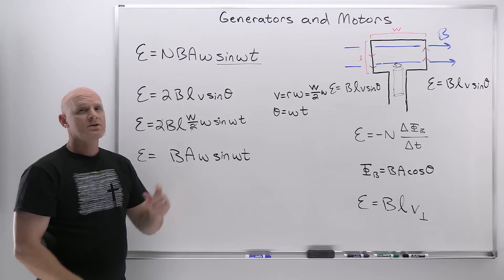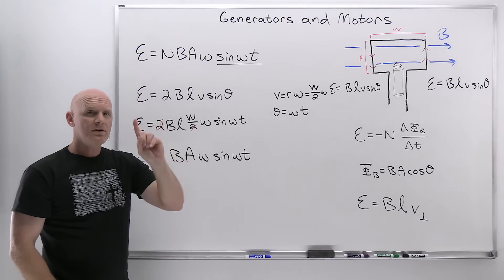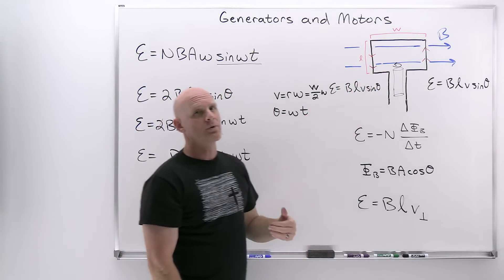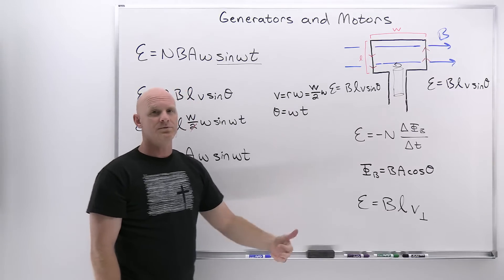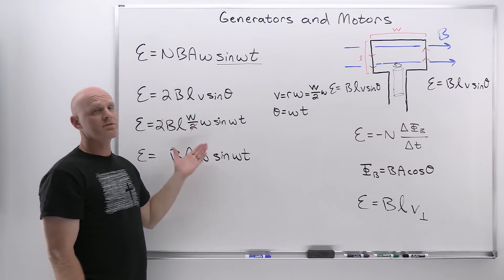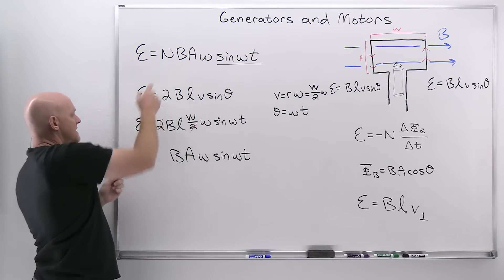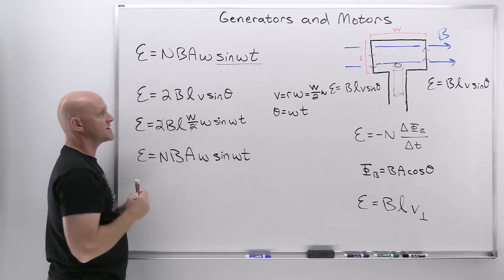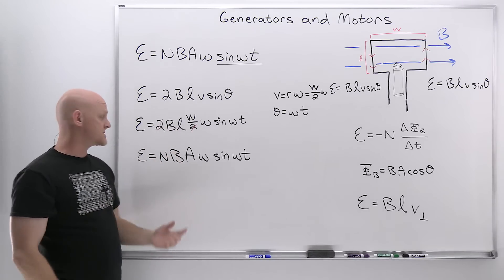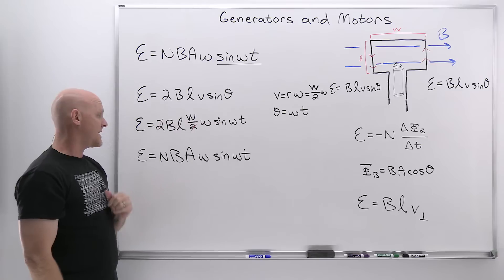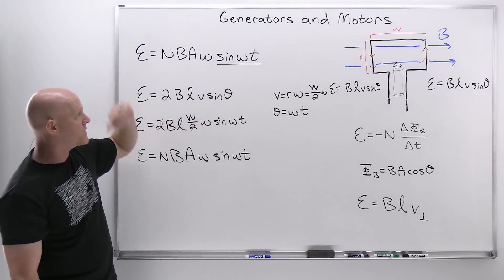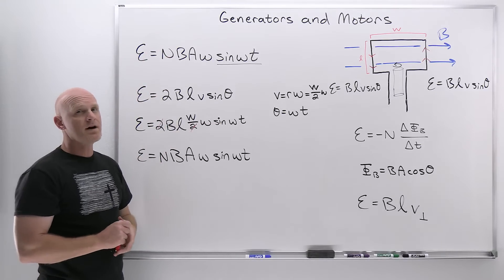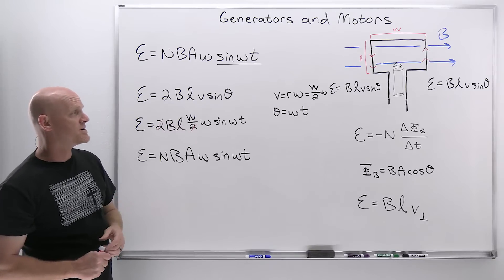The expression derived here is for a single loop of wire, as depicted in the diagram. But if we had two loops, we'd have to double this value. If we had 10 loops, we'd multiply by 10. That's where the N comes from — we've got to factor in the number of turns of wire, not just a single turn. And that takes it into account. We've now derived our expression for the EMF produced by a generator.